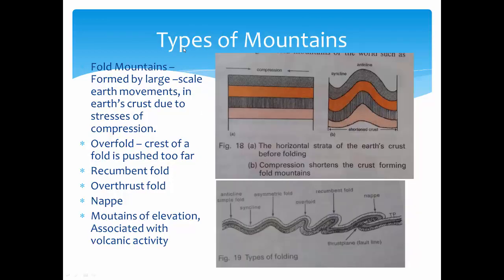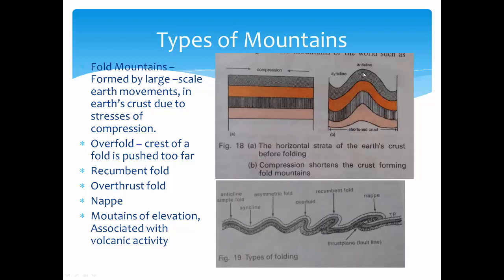Types of mountains: first, fold mountains. They are formed by large-scale Earth movement in the Earth's crust due to compressive stresses. If the Earth's crust undergoes compression — due to tectonic plate movement or mantle movement — it compresses into a wave form. Some portions get raised (anticline) and some get depressed (syncline). The horizontal surface rises and that creates fold mountains.